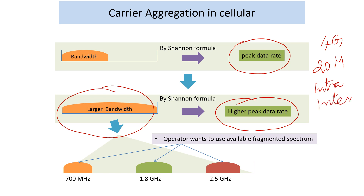Operators also found carrier aggregation very flexible for combining their spectrum assets. Similar to how we have multiple bands in Wi-Fi, cellular operators in different parts of the world have different spectrum assets which they want to pull together — whether it is to achieve higher data rates or to manage traffic.